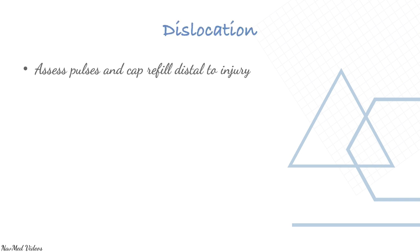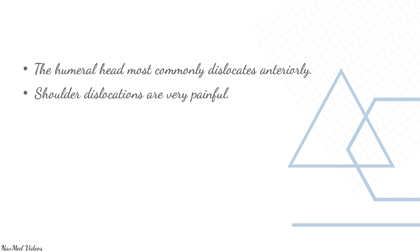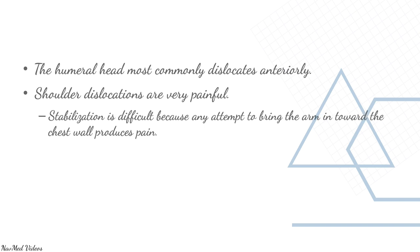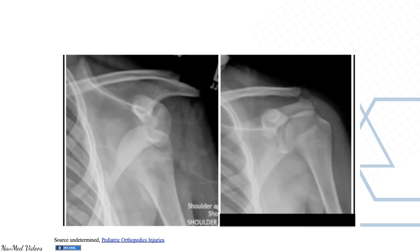Avascular necrosis is bone death caused by decreased blood flow and is an orthopedic emergency. Assess pulses and capillary refill, assess range of motion, obtain an X-ray, and provide pain relief. The humeral head most commonly dislocates anteriorly. Shoulder dislocations are very painful; stabilization is difficult because any attempt to bring the arm toward the chest produces pain. Splint the joint in whatever position is most comfortable for the patient.